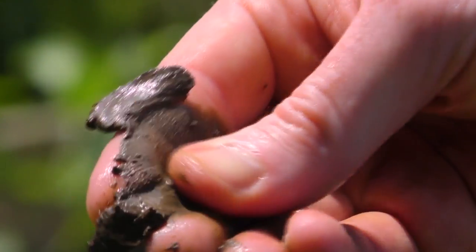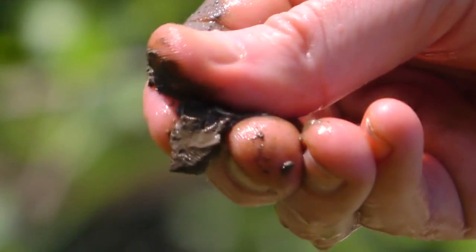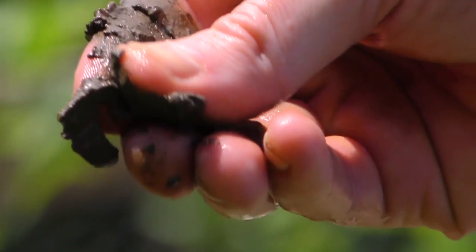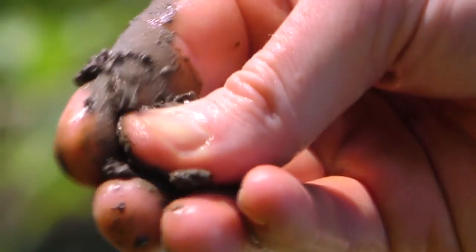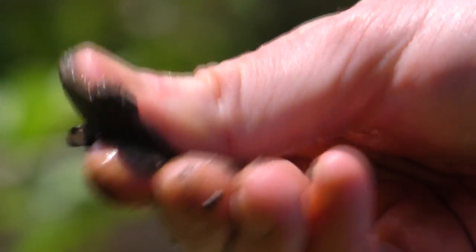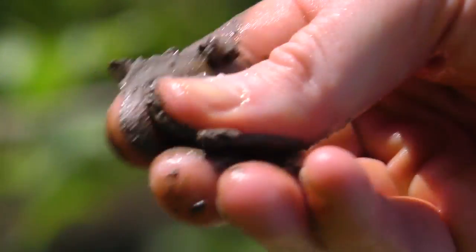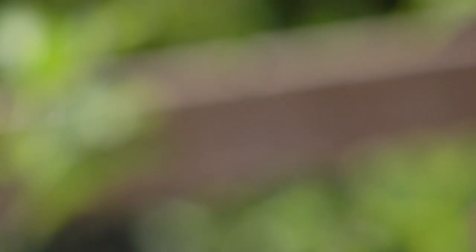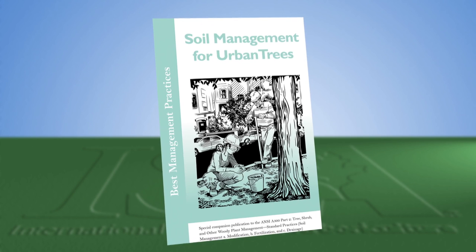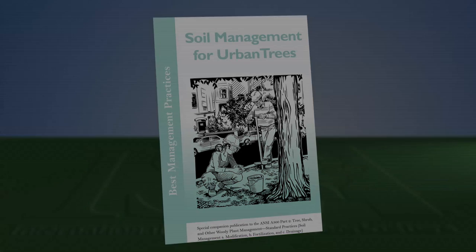To determine the exact type of soil within the chart using the feel method, moisten a small amount of the sample and rub it between your thumb and forefinger, squeezing it down to its smallest particles. Feel for grittiness, smoothness, stickiness, or a flower-like texture to determine what type of soil you have. For more information on soils and soil texture, check out the Soil Management for Urban Trees Best Management Practices booklet in the ISA Web Store.